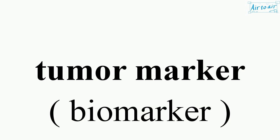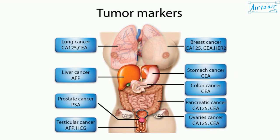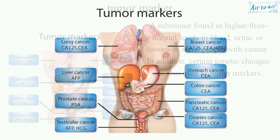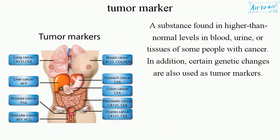Tumor marker: A substance found in higher-than-normal levels in blood, urine, or tissues of some people with cancer. In addition, certain genetic changes are also used as tumor markers.